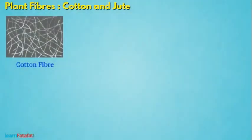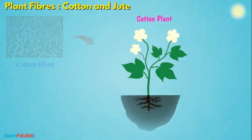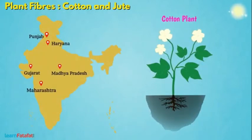Cotton fibers are obtained from cotton plants. Cotton plants are grown in fields having black soil and need warm climate for growth. It is grown in Punjab, Haryana, Gujarat, Madhya Pradesh, Maharashtra, Tamil Nadu, and Andhra Pradesh states of India.